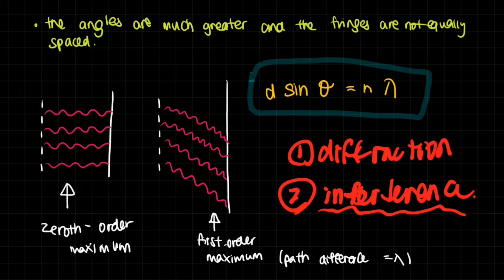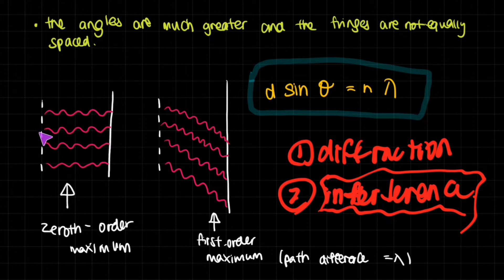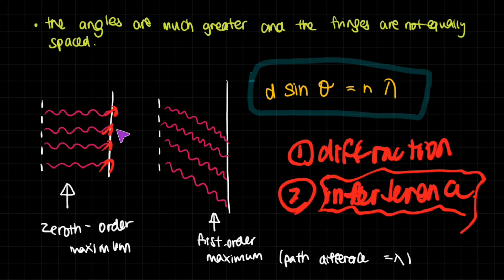Let's take a look at how this interference really happens. On the zeroth order maximum — remember this is the one directly along the traveling line of the incident wave — all of the light has traveled exactly the same amount. So imagine each slit in the grating has light coming out; they've all traveled exactly the same amount. They're all going in the same direction, all reaching their peak together, which means their resultant wave is going to be very big — an addition of all of them. This is what makes the light so bright at the zeroth order maximum.